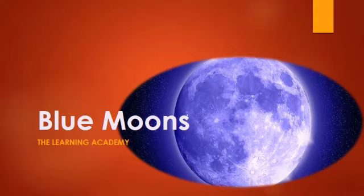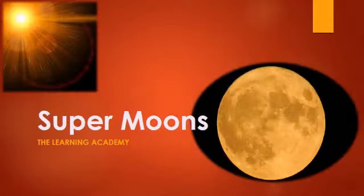It doesn't have a dark side either. Basically, both sides of the moon get the same amount of light from the sun. The moon causes the rise and fall of tides on Earth due to the gravitational pull that it exerts.